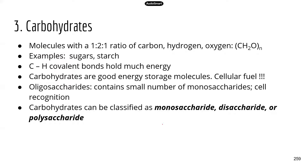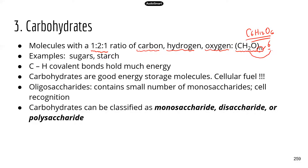First, we're going to look at carbohydrates. Carbohydrates have a special chemical formula where the carbon to hydrogen to oxygen ratio is 1:2:1. You can write the general formula for carbohydrates as (CH₂O)ₙ, where n can be any number. For example, most sugar molecules we know — like glucose and fructose — have n equal to six, so their chemical formula is C₆H₁₂O₆.